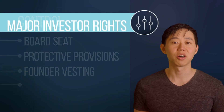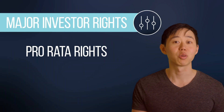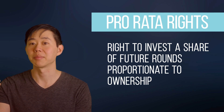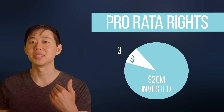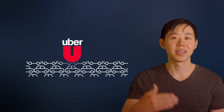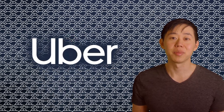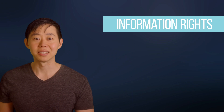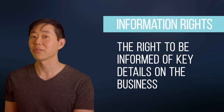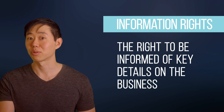Investors will also negotiate for what's called major investor rights, of which the most important is prorata rights. Prorata rights give investors the chance to invest their share of the next round so they can maintain the same ownership over time. For example, if an investor owns 10% of the company, they'll have the right to invest up to 10% of the next financing — say $2 million of a $20 million round. If you invested at the seed stage in a company like Uber and didn't participate in follow-on investing, you probably would have left billions on the table. Another major investor right is information rights — details on the business the company has to share with investors so they can better decide whether to exercise their prorata.